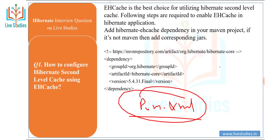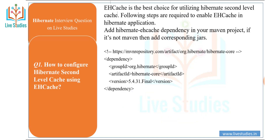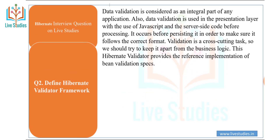Another question: define the Hibernate Validator framework. Data validation is considered an integral part of any application. Data validation is used in the presentation layer with JavaScript and server-side code before processing. It occurs before persistence, to make sure data follows the correct format. Validation is a cross-cutting task, so we should try to keep it separate from business logic. Hibernate Validator provides the reference implementation of Bean Validation.